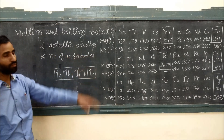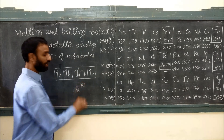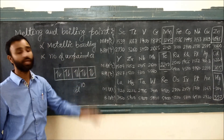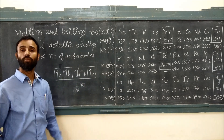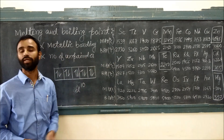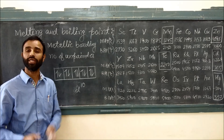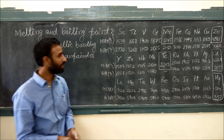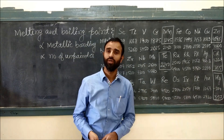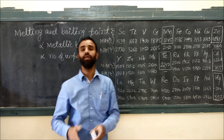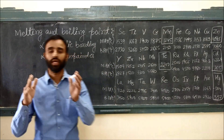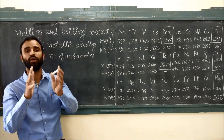For zinc, cadmium, and mercury, they have no unpaired electrons — D10 configuration — that's why their metallic bonding is weakest and melting and boiling point is lowest. And why is there a dip for manganese or technetium? Because they have a stable electronic configuration, giving them a weak metallic bond.